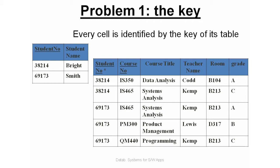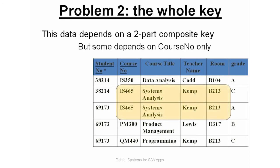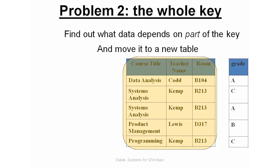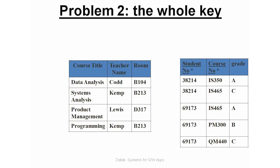We need to reach the second normal form. We need to check every non-key attribute to see if it depends on every part of the compound key. For the table with a compound key of student number and course number, the non-key attributes are course title, teacher name, room, and grade. Some of these non-key attributes depend on course number only, so we take these attributes with the course number and put them in a separate table. Course number then becomes a foreign key to the initial table.